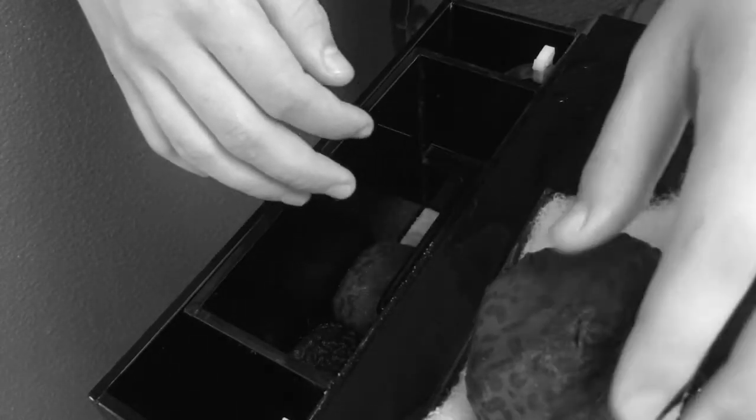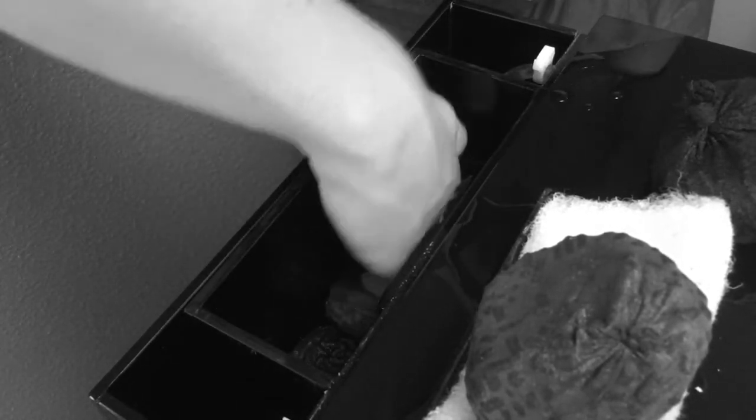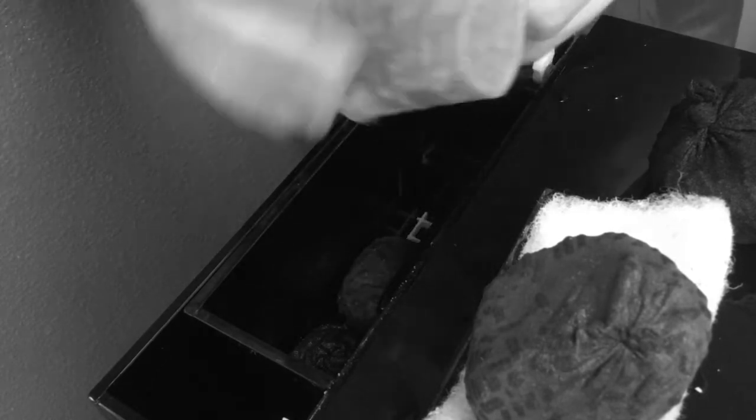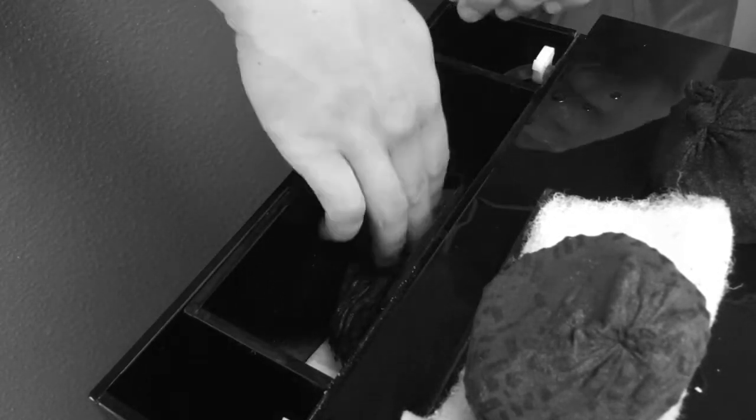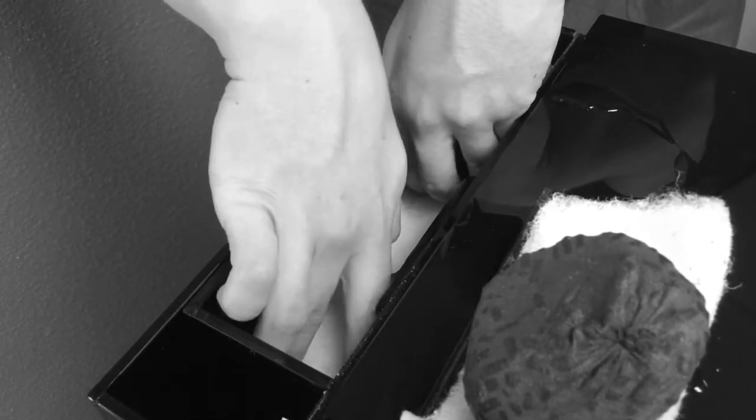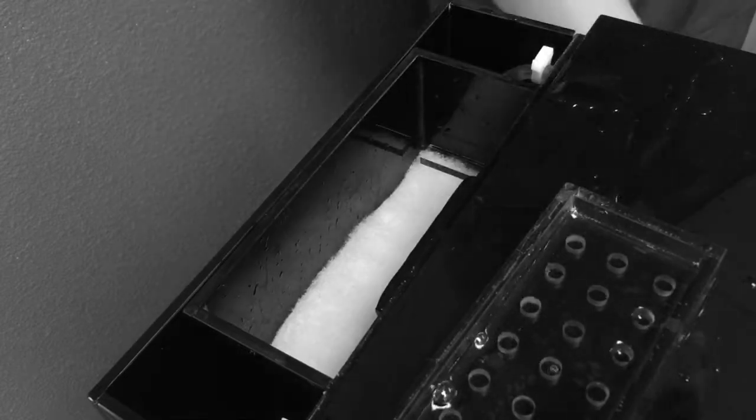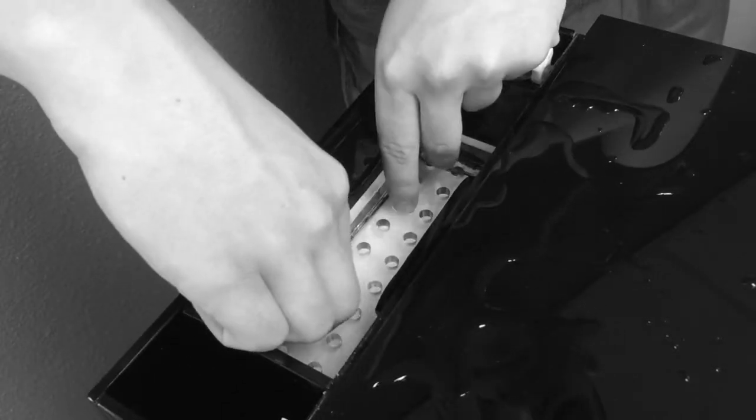Remove the drip tray and mechanical filters. Then remove the carbon bag on the right hand side and replace the micron pad. Slide the other two carbon bags over one spot and place the new carbon bag in the empty spot. Make sure your carbon is evenly distributed and replace the mechanical filter and the drip tray. Discard the old materials and you're good to go.